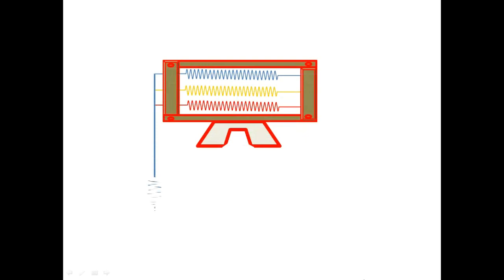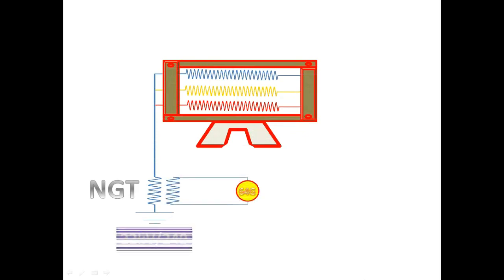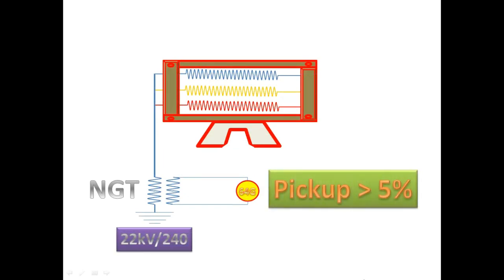In the generator, the neutral is connected with the neutral grounding transformer, and from that neutral grounding transformer we have a VT connection. The VT is connected to the relay for sensing fault, and this VT ratio is 22 kV over 240 volts.